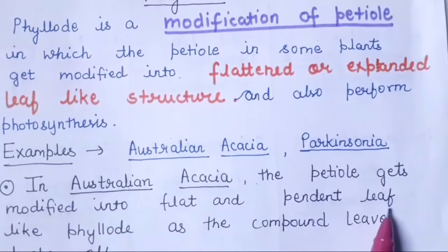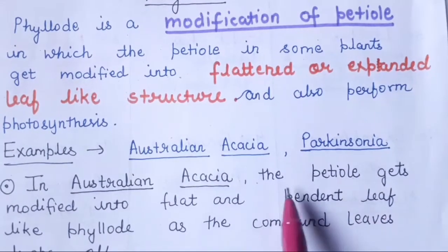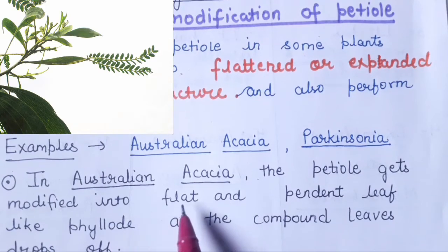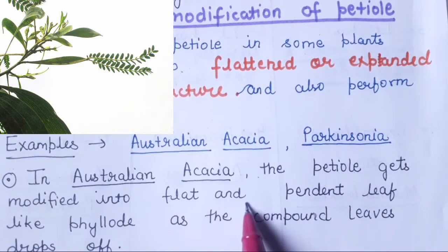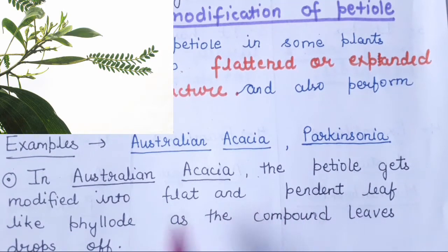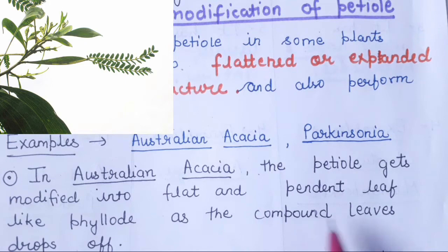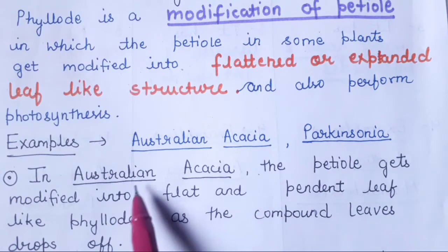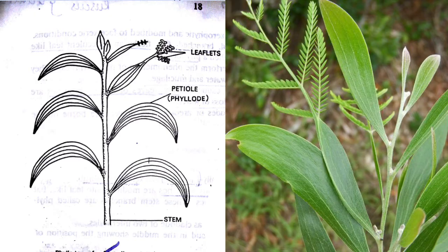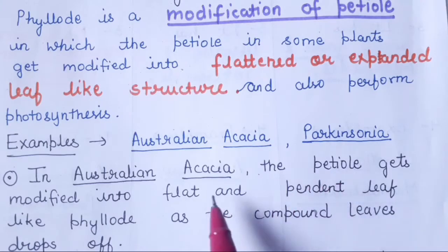Examples in this case are Australian Acacia and Parkinsonia. In the case of Australian Acacia, the petiole gets modified into a flat and pendant leaf-like phyllode as the compound leaves drop off. The compound leaf falls off, due to which the petiole gets modified into this flat, pendant leaf-like phyllode.